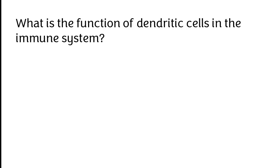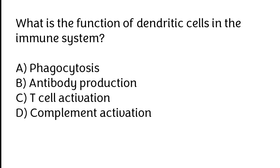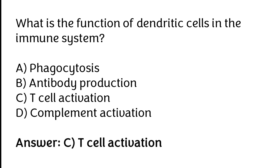What is the function of dendritic cells in the immune system? Phagocytosis, antibody production, T-cell activation, complement activation. The correct answer is option C. The function of dendritic cells in the immune system is T-cell activation.